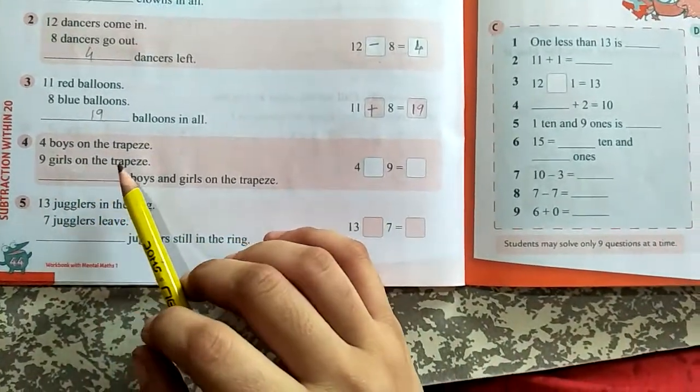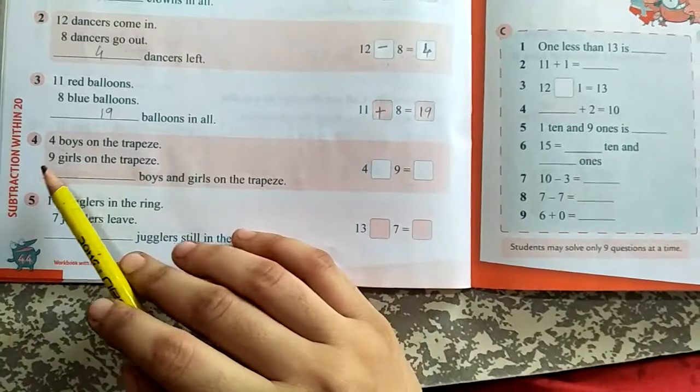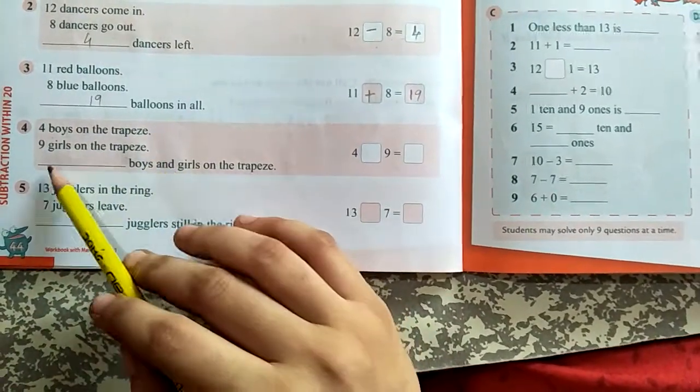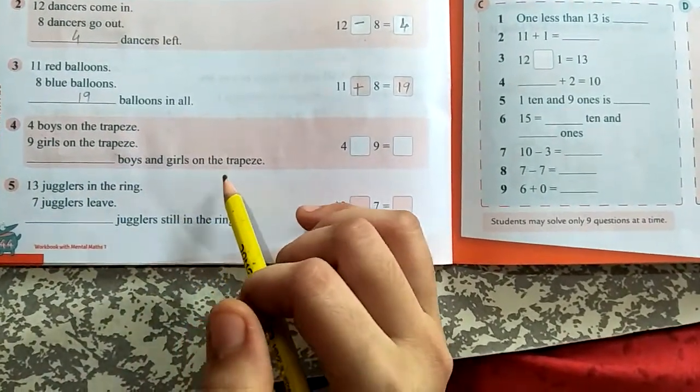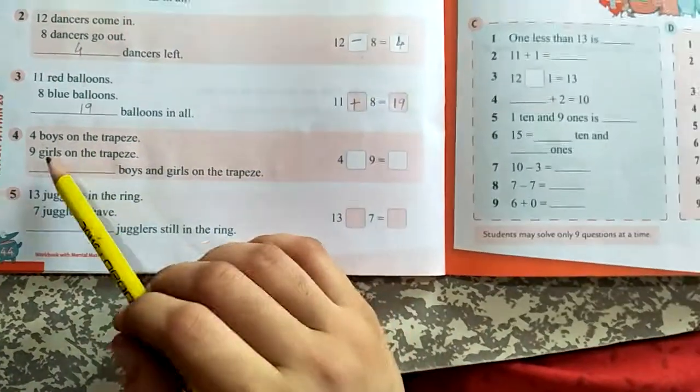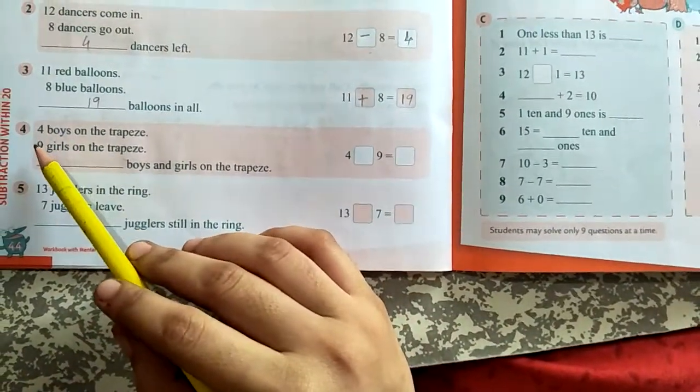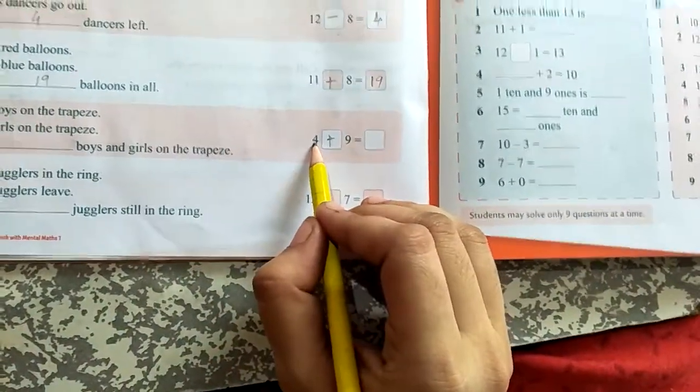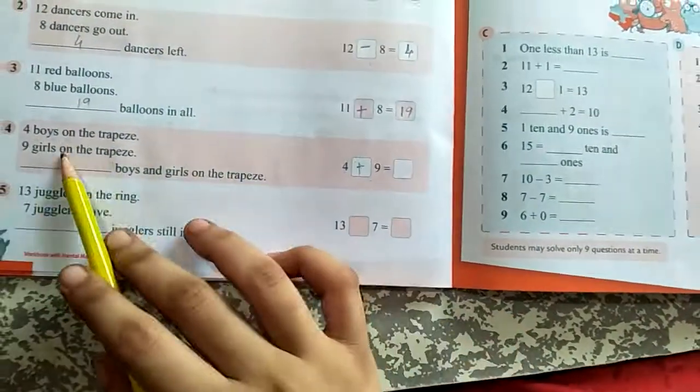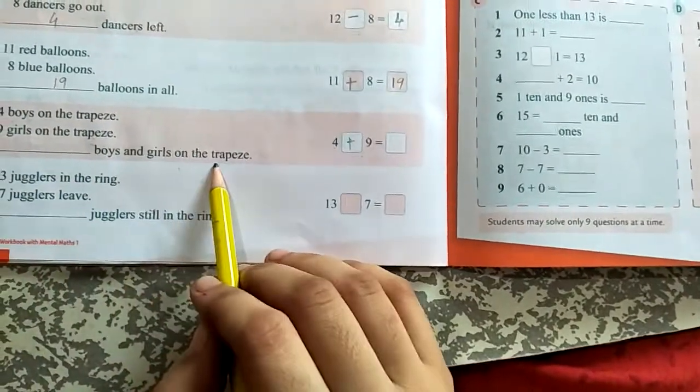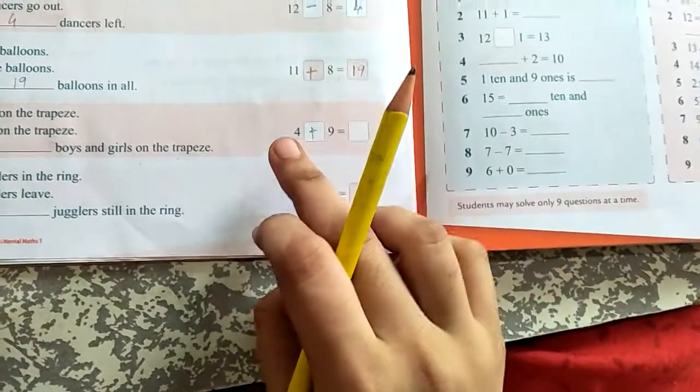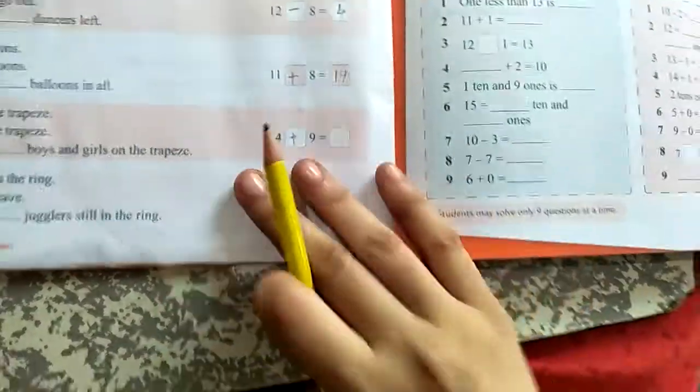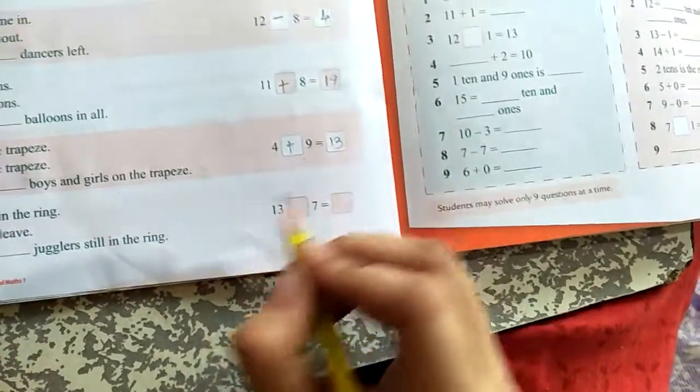4 boys on a seesaw, 9 girls on a seesaw, dash boys and girls on a seesaw. So 4 boys, 9 girls, total how many boys and girls? 4 plus 9 is equal to 13. 13 is the answer.